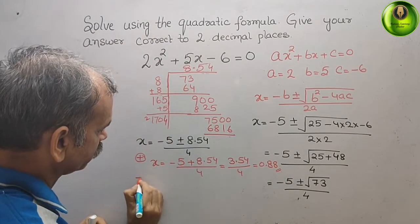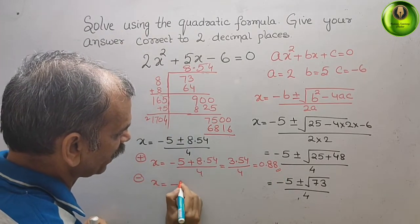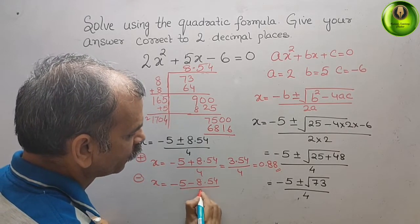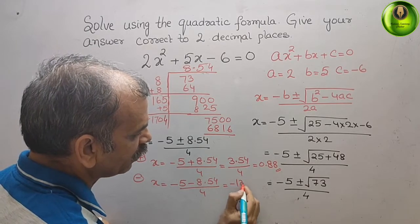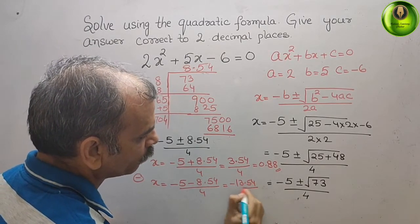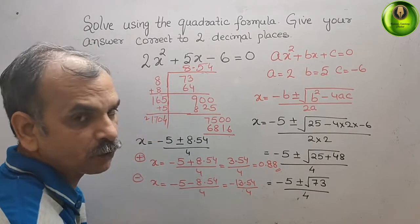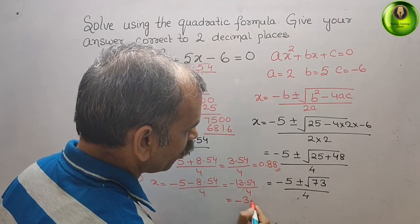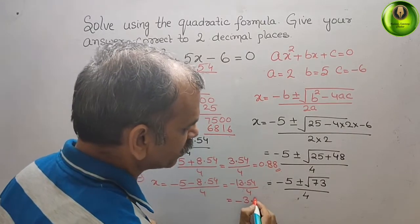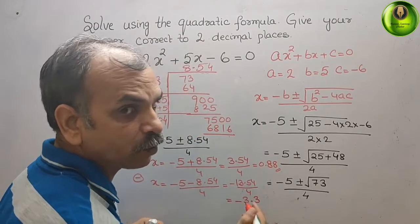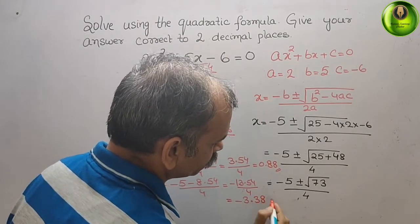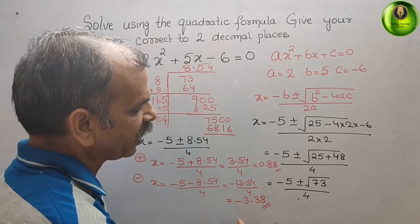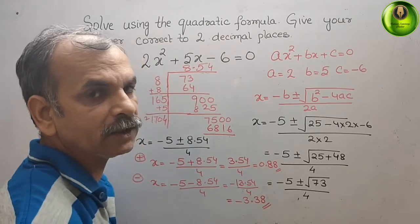Next comes your negative. So x = (-5 - 8.54) / 4. That is equal to -13.54 / 4. So 13.54, that means it will go -3.3, 12, 15, 15 means again 3, 34, 34 means 8. So we will get -3.38 here. So this is your negative value and 0.88 is your positive value.